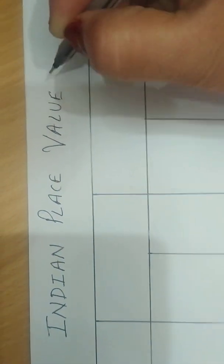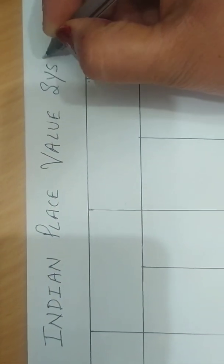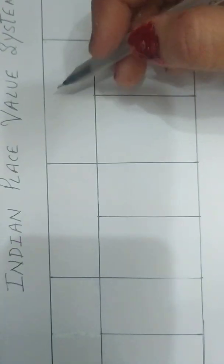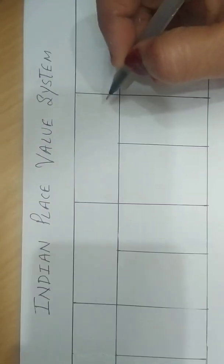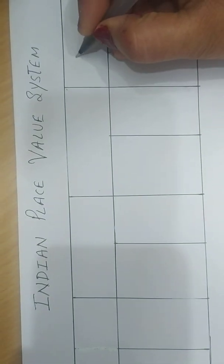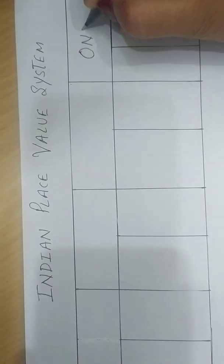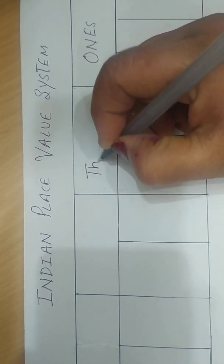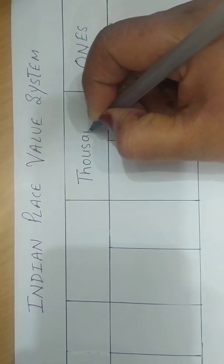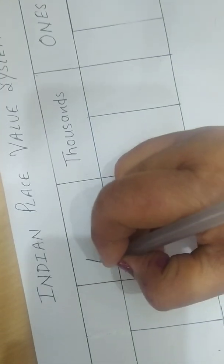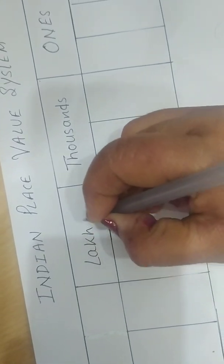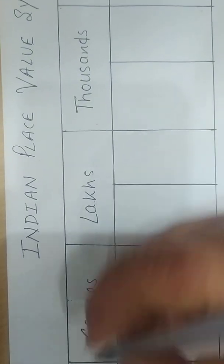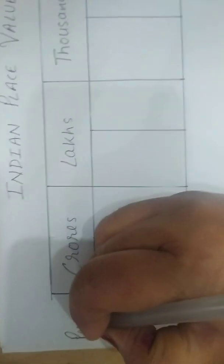In Indian place value system, the periods are ones, thousands, lakhs and crores. Ones, thousands, lakhs and crores. These are the periods.